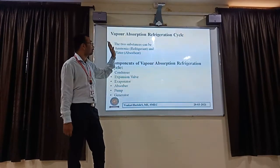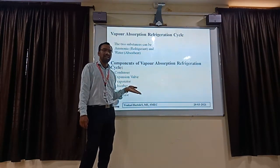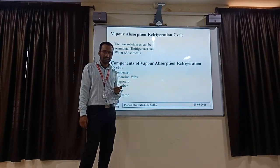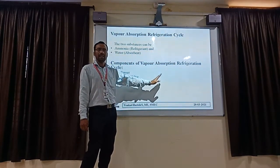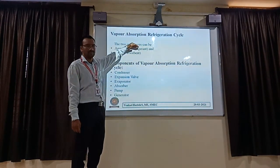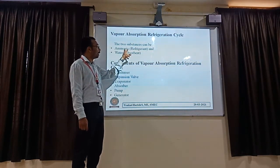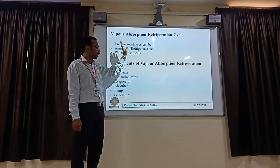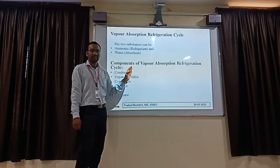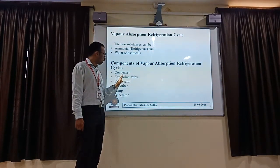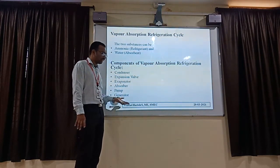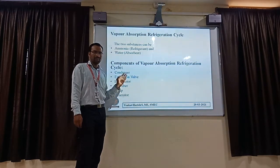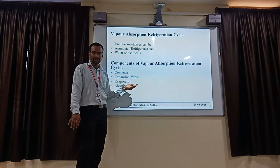First we will understand the vapor absorption refrigeration system. Before entering into the diagram, first we will understand what it contains — what are all the parts it has, so that individual performance of the parts if understood will give a clear picture of the total layout working. We are using ammonia as the refrigerant and water as the absorber — these two are very important for the vapor absorption system. The components it contains are: condenser, expansion valve, evaporator, absorber, pump, and condenser. First we will understand the individual component working, so that when we assemble in the line diagram, it will be clear about the final results.